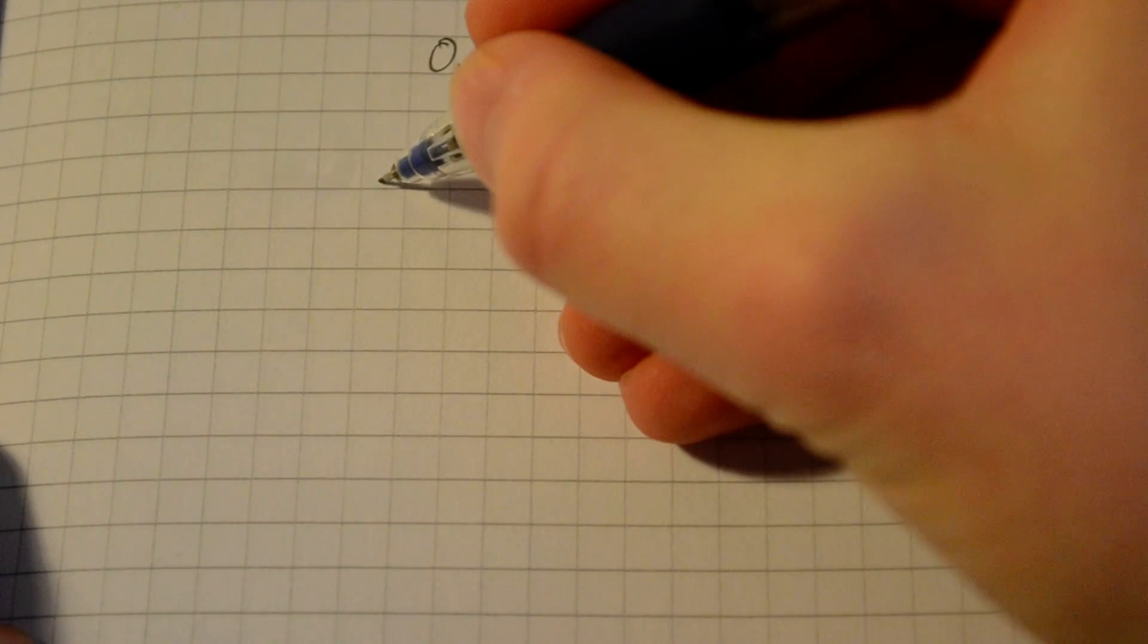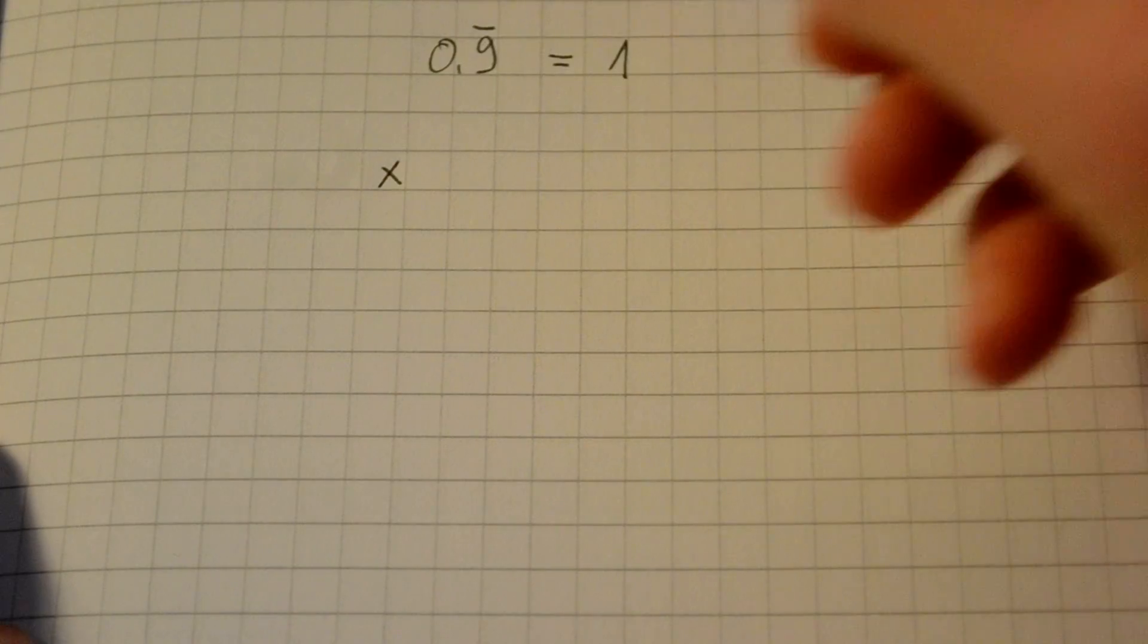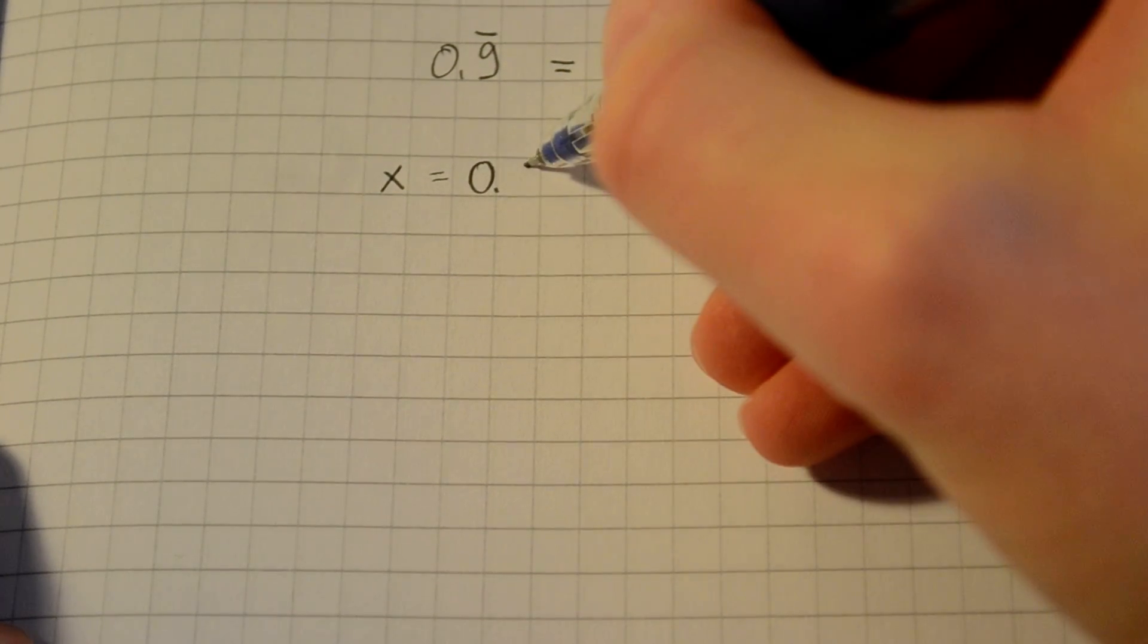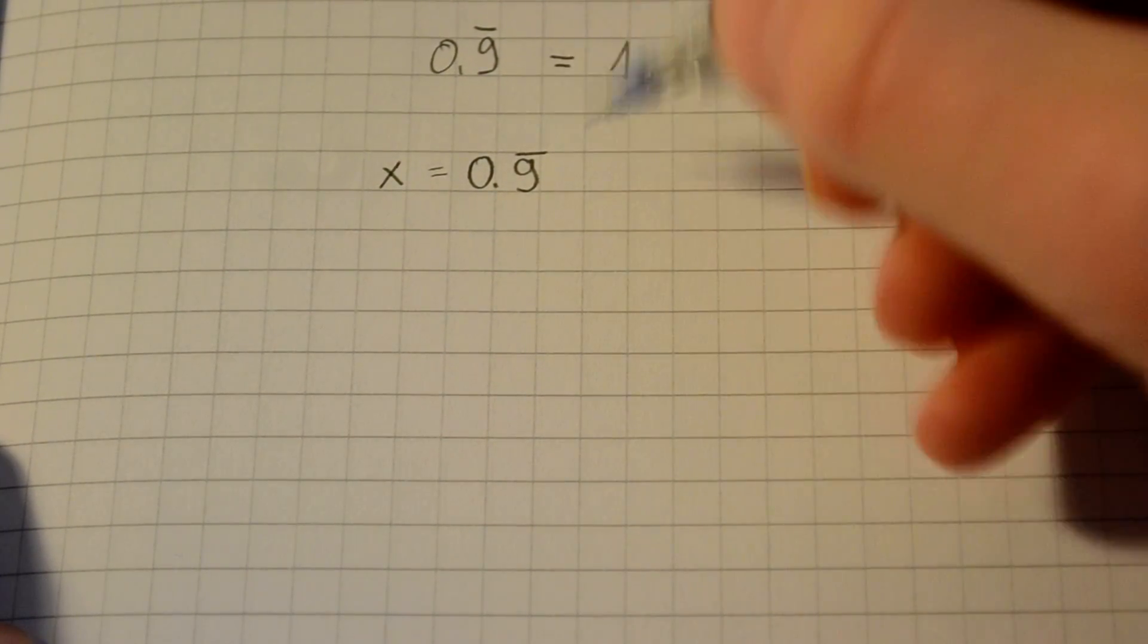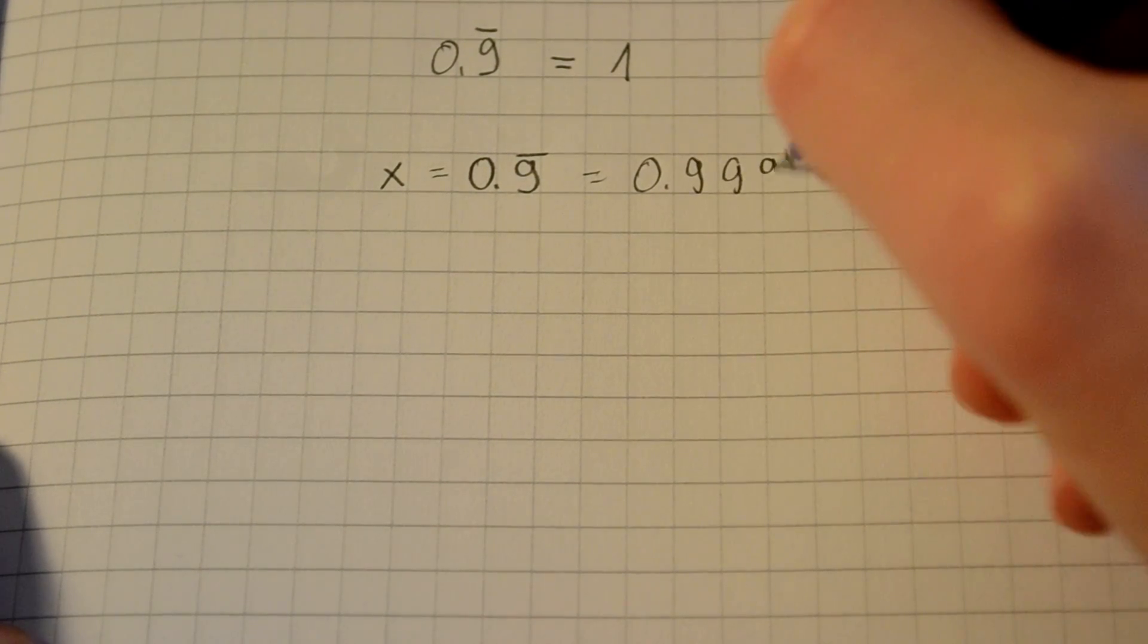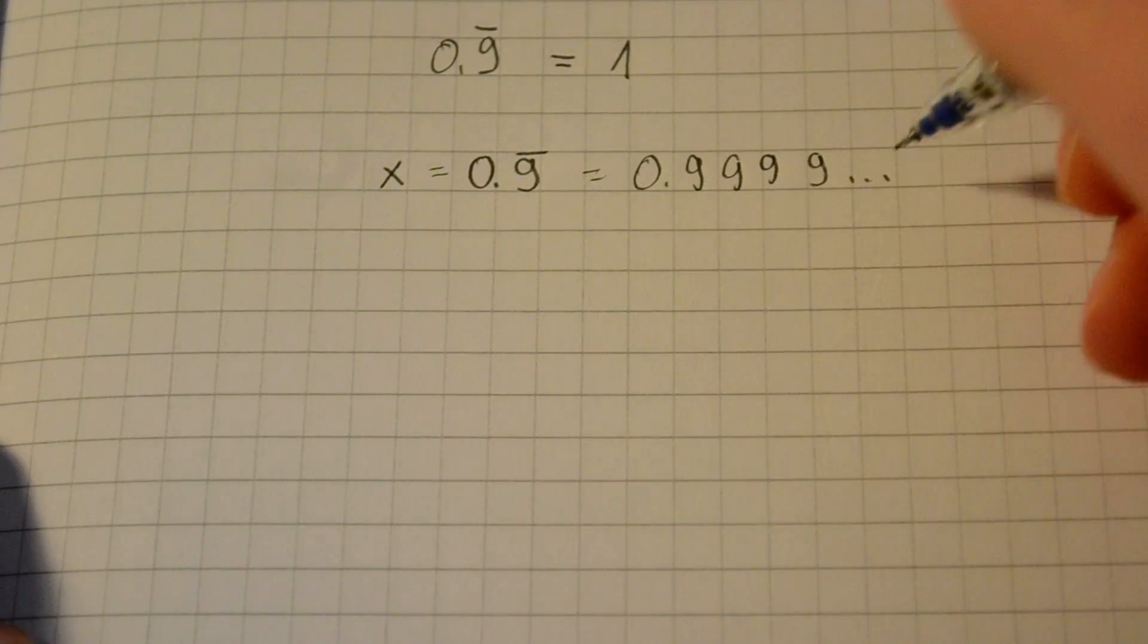If you take for example x, and that x represents the 0.9 repeating number, you can write this the same as 0.999... it goes on forever.